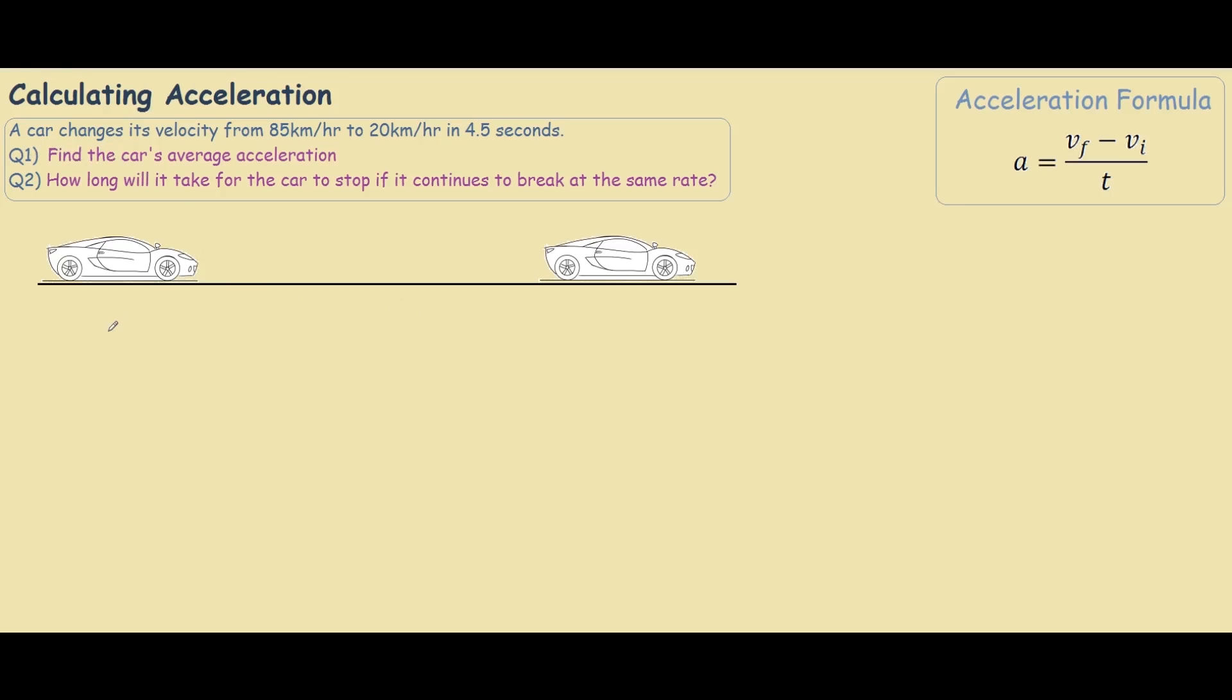So let's write down our knowns and unknowns. In this case our velocity final equals 20 km per hour. So the vf, the velocity final is where the car ends up and the velocity initial is where our car begins, so 85 km per hour.